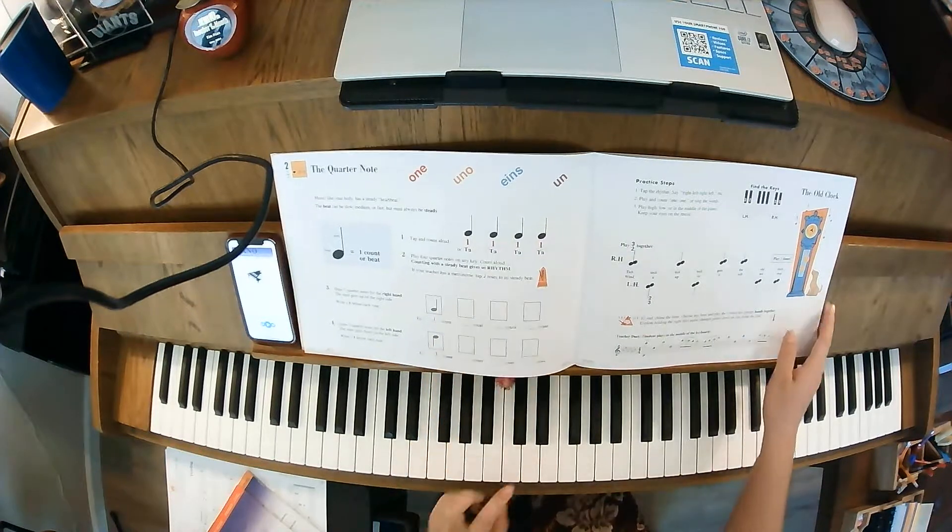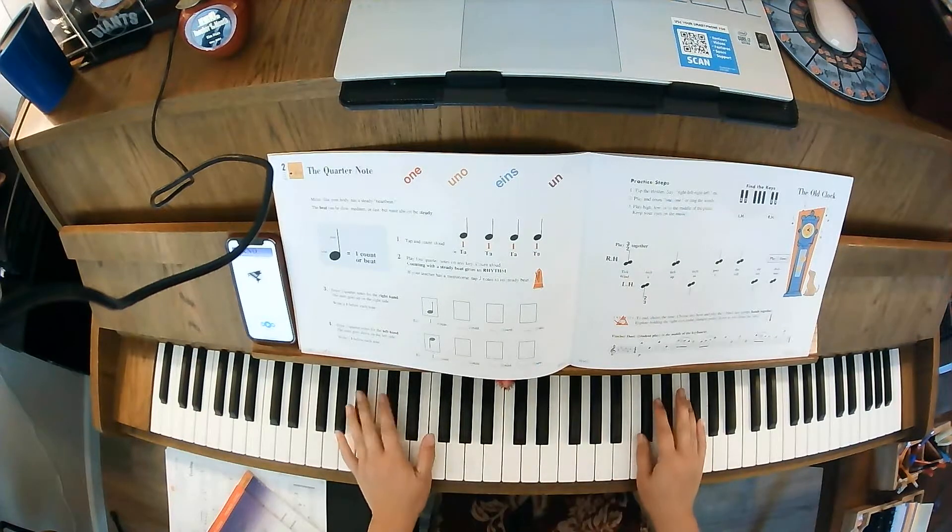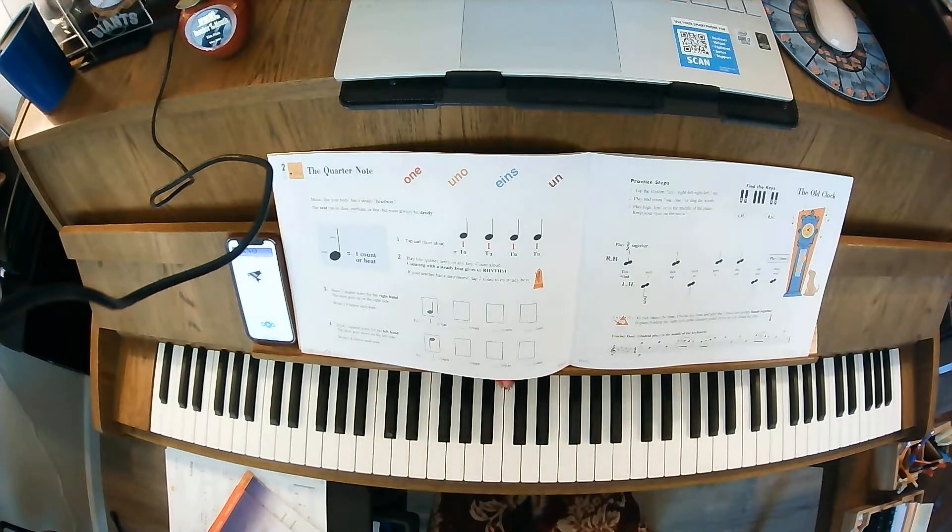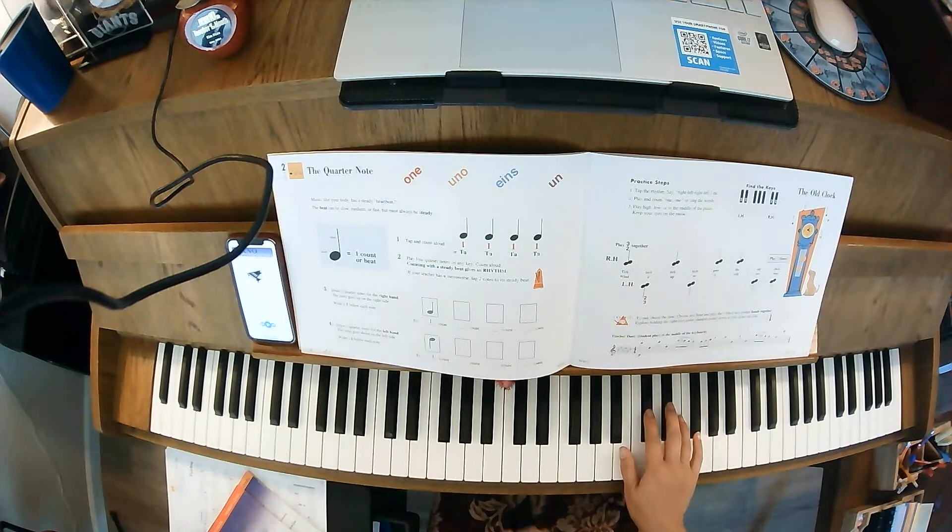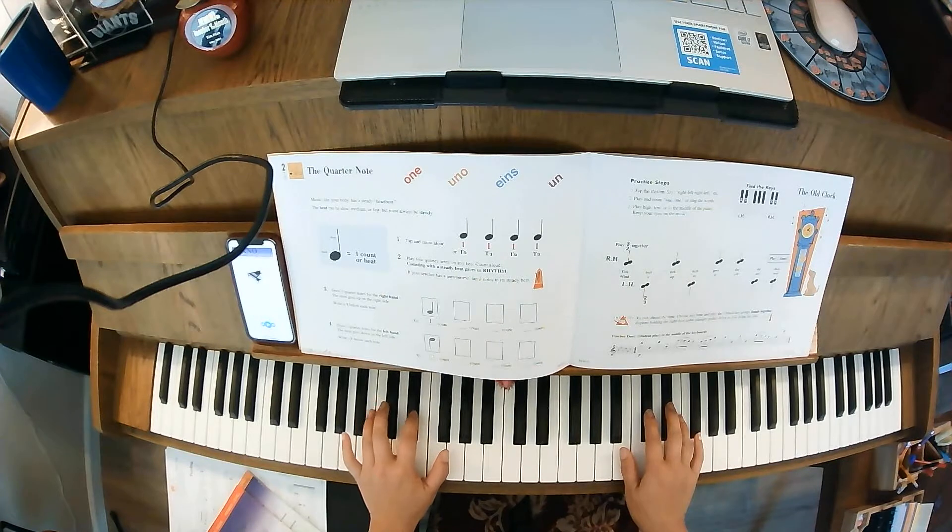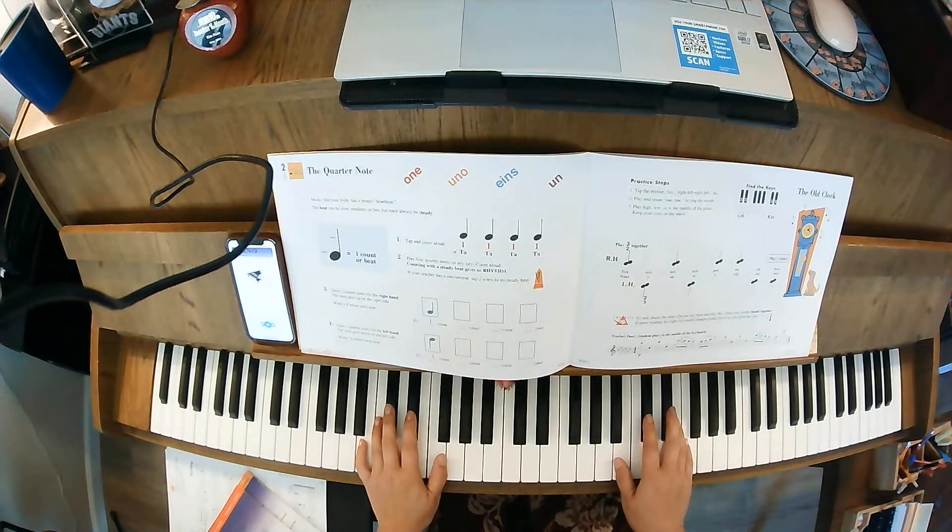So your first song is The Old Clock. It is looking at your two black keys. Your right hand is going to pick a set of two black keys, fingers two and three, and your left hand a set of two black keys, fingers two and three. You can play anywhere you'd like on the piano depending on how you want your old clock to sound.